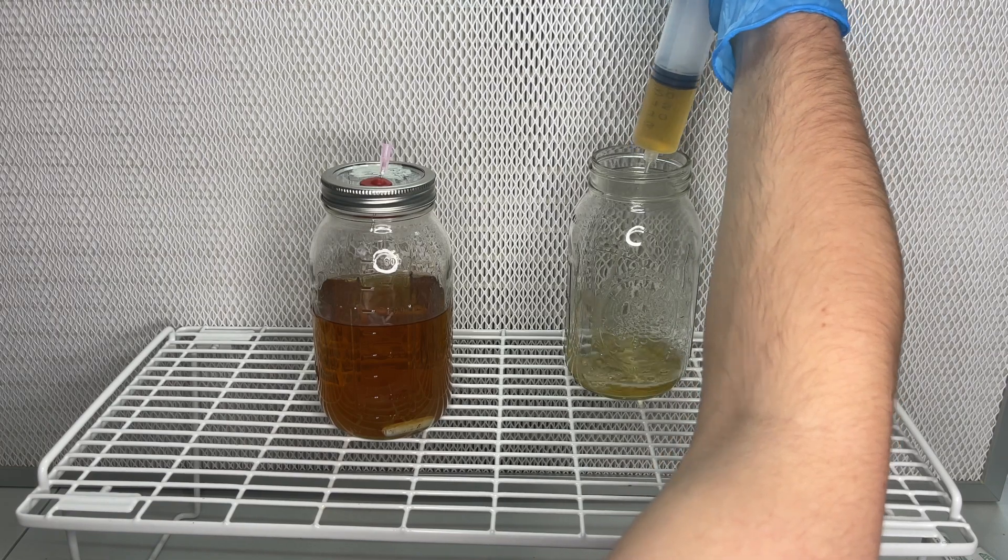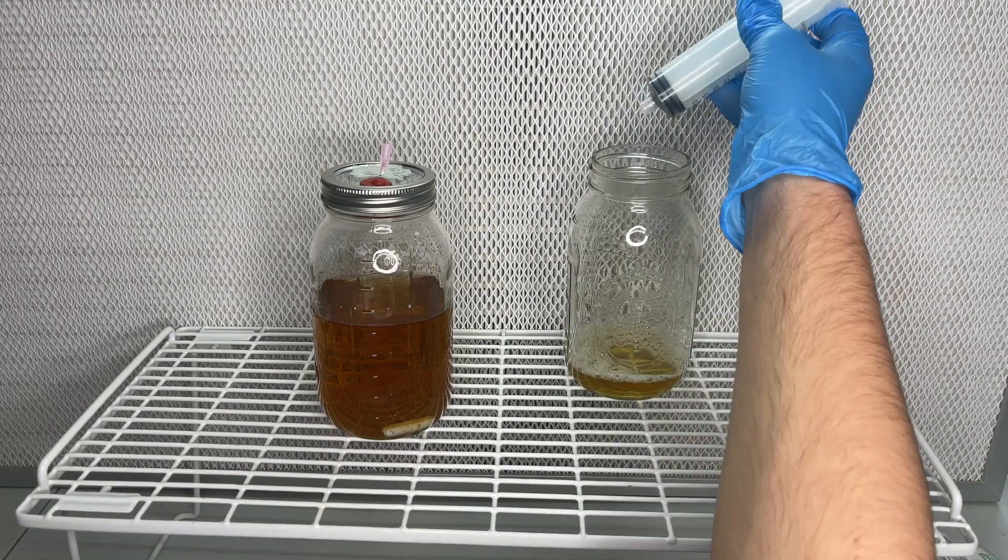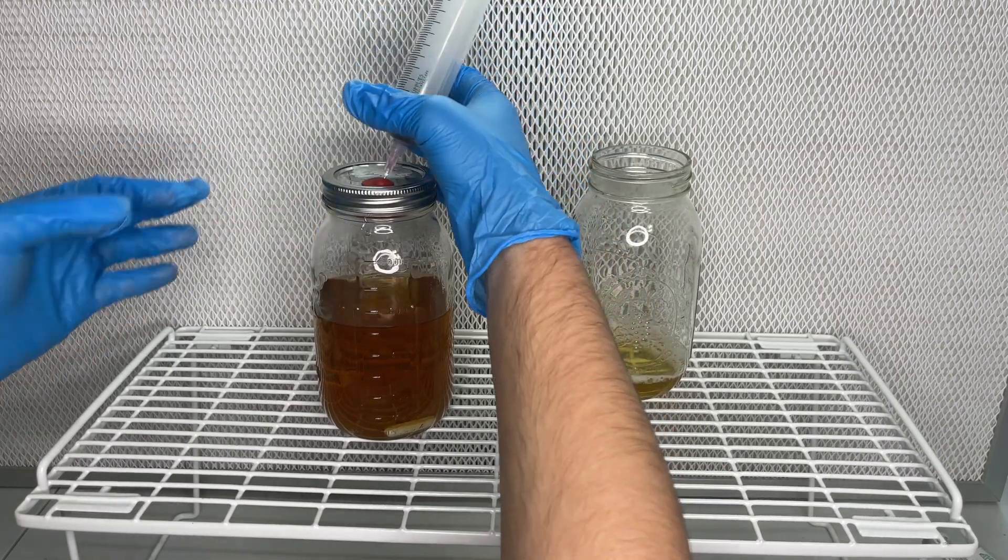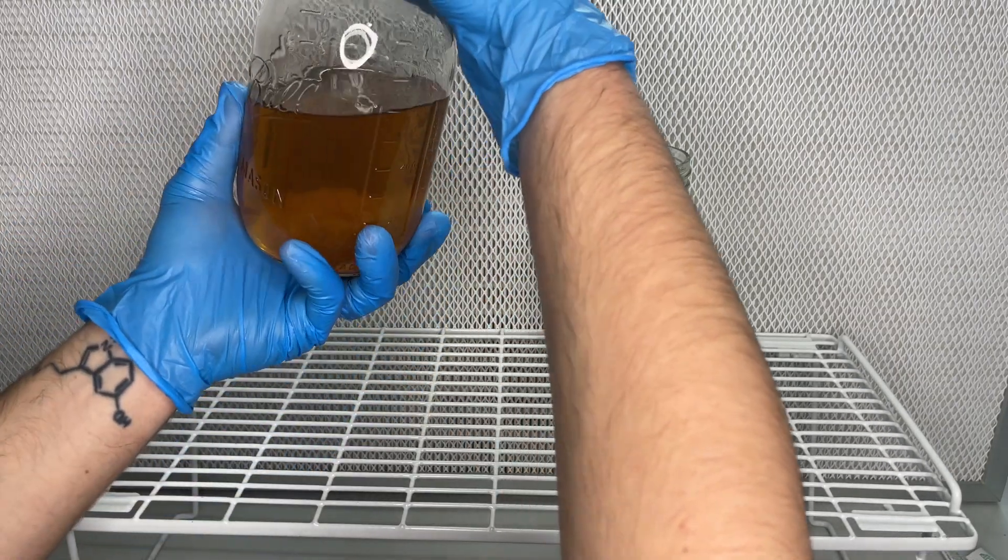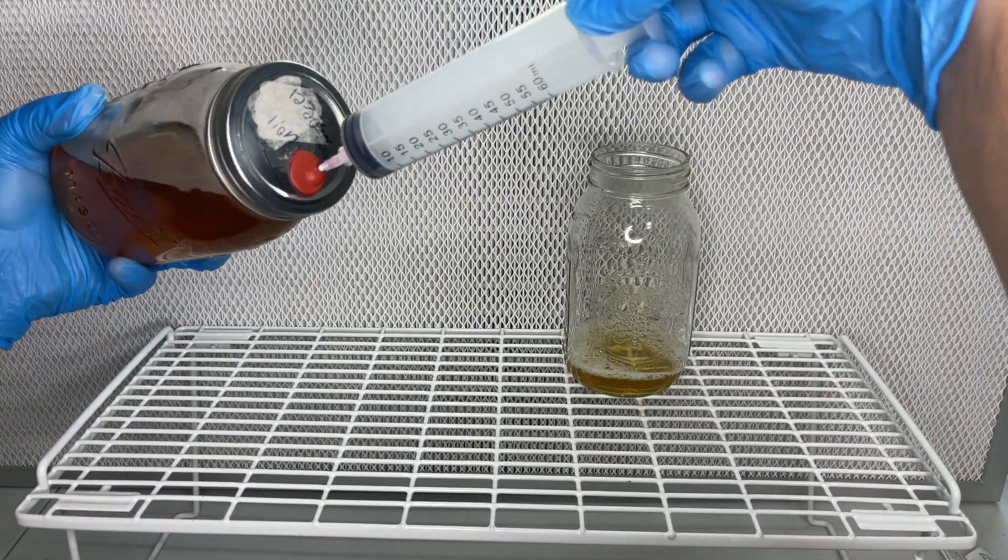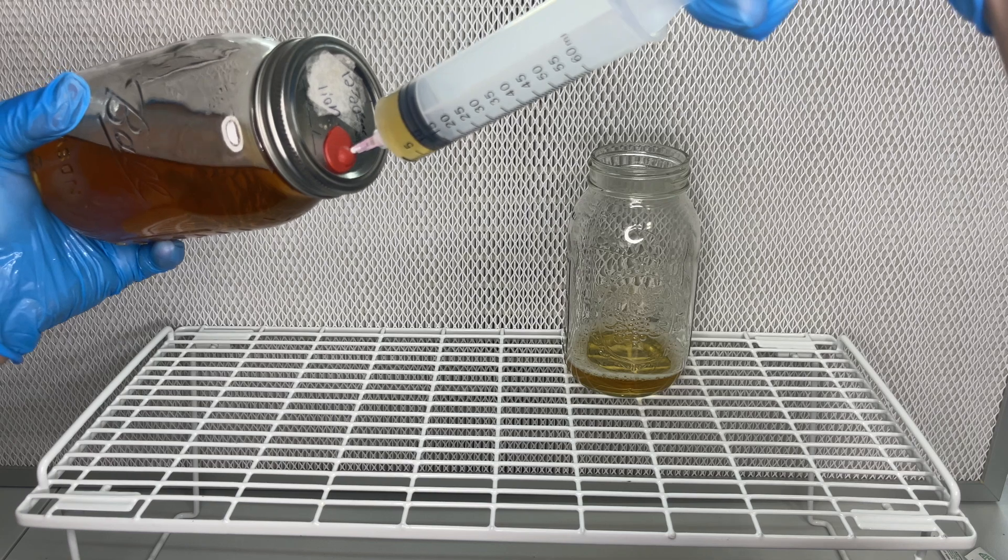You can leave the needle in the injection port, and just twist off the syringe when you're discarding the extra liquid. Each time being careful not to move the jar around too much so that I don't disturb the mycelium at the bottom.